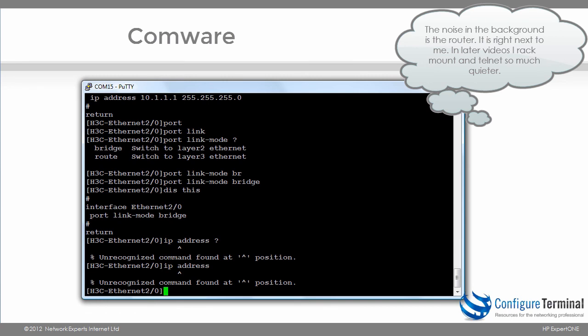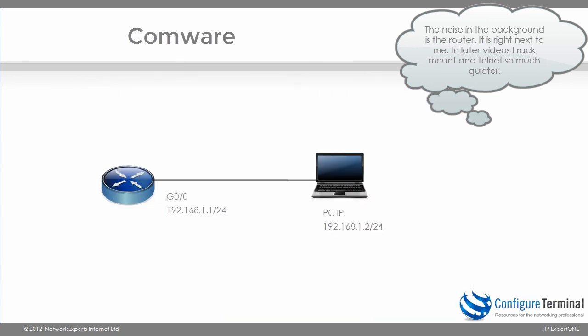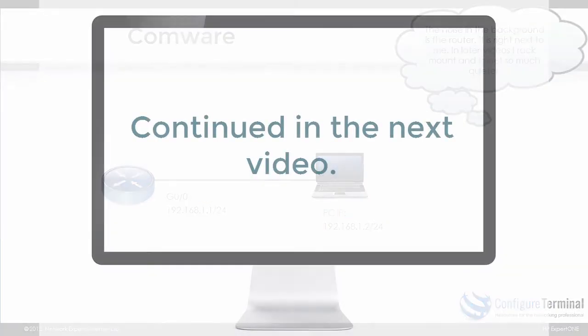I'll show you an example of that in a moment. For now, I've configured an IP address on my router on Gigabit 0/0 of 192.168.1.1. Let's configure an IP address on the PC.